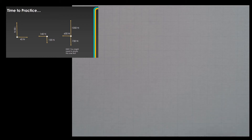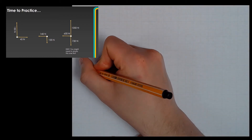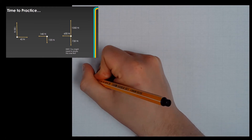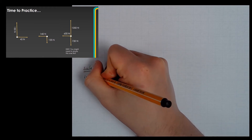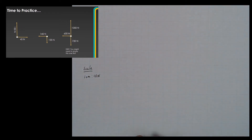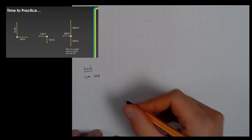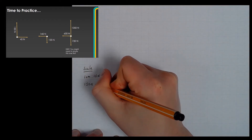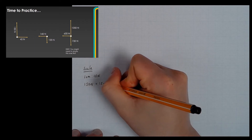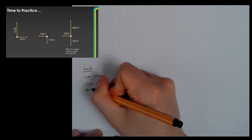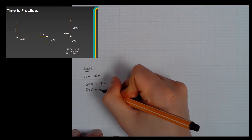We'll go through the answers to the first question. First thing to do is to pick a scale, and the scale I'm going to pick is 1 centimetre equal to 10 newtons — that'll give me a nice big diagram that'll fill my piece of paper. You can pick a different scale though, that's absolutely fine. That means my first line of 150 newtons is going to be 15 centimetres long, and my second line of 40 newtons will be 4 centimetres long.